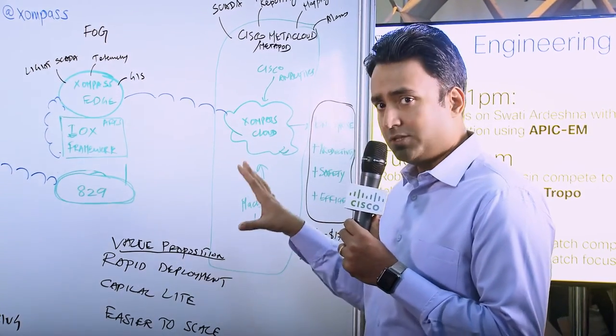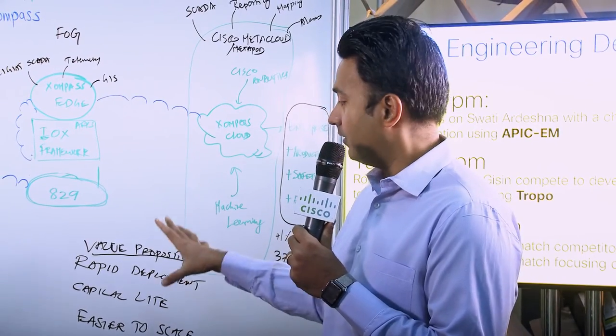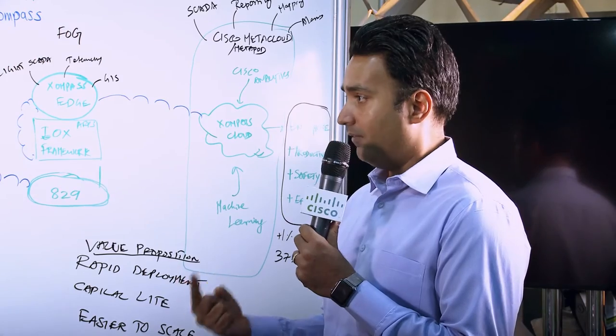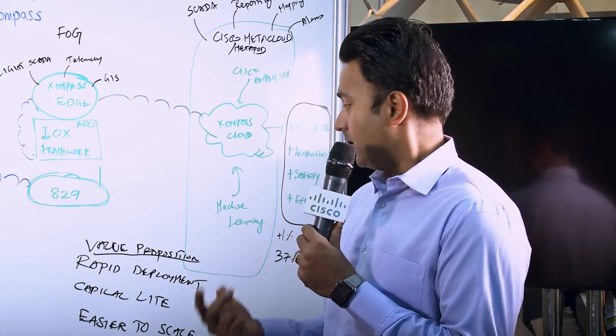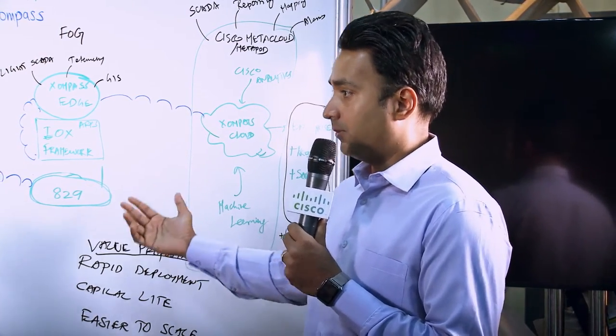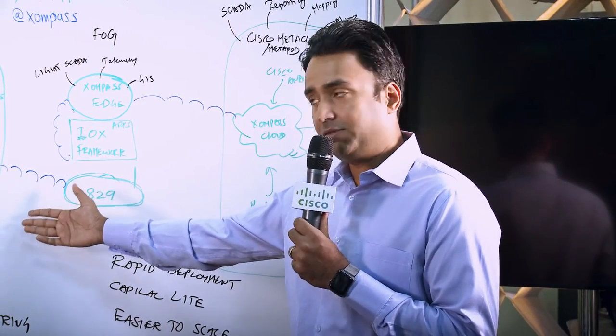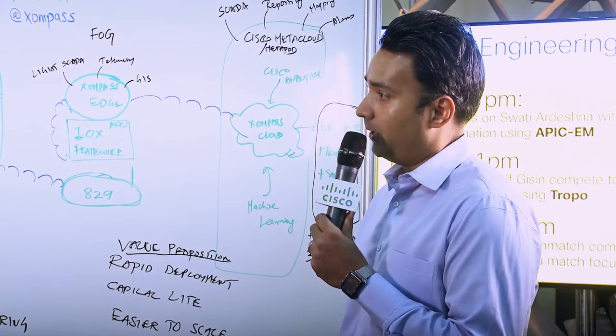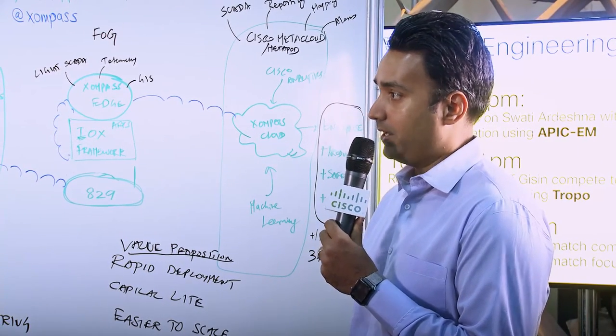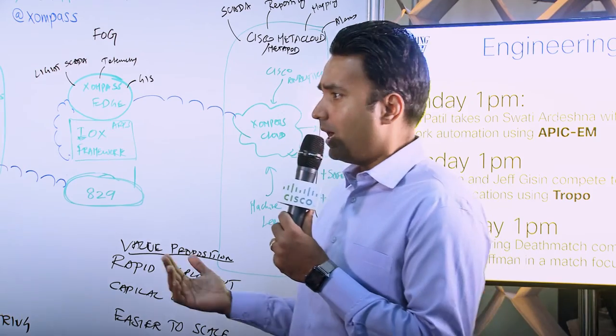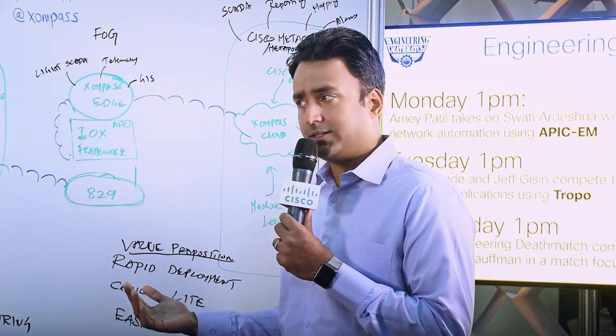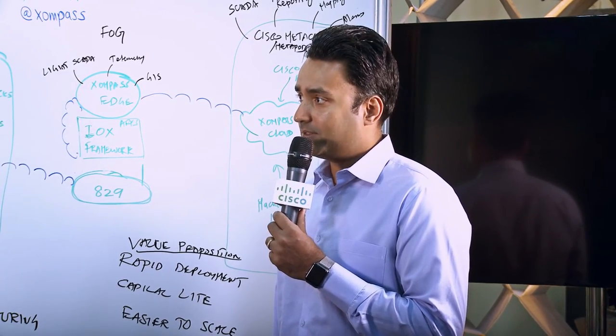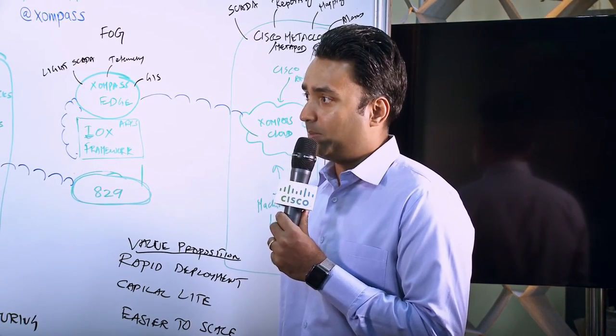And the value proposition is very important. We have three value propositions we are talking about here. We can deploy it rapidly, the capital light at the edge, and then we can easily scale from 1 to 10 to 1,000 to 10,000 devices. You can see the number of devices in the marketplace. These are billions, not millions. So edge intelligence and fog computing and cloud technology really enable us to do that, which was just not possible five years back. So we're very excited about this and here in Cisco Live, a lot of great showcases and we're very excited about contributing on the presentation tomorrow.